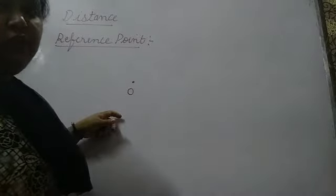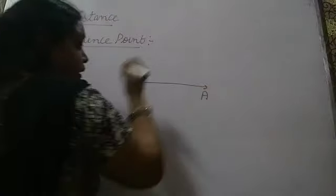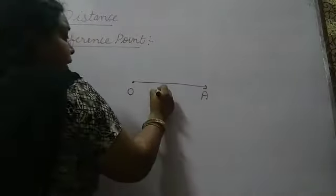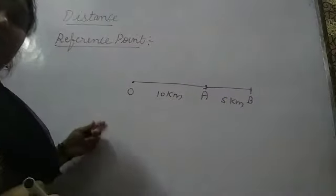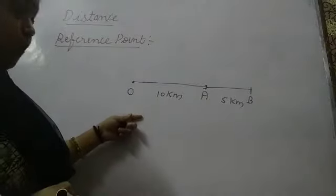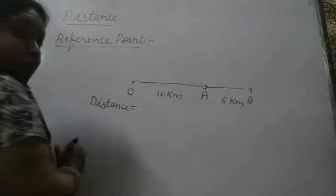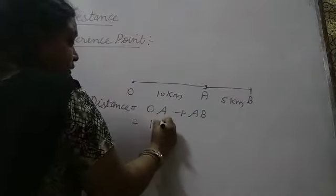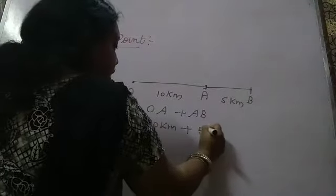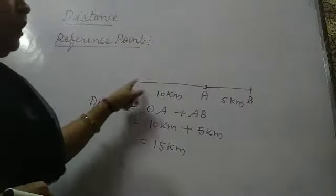The reference point is the point where an object starts its motion or starts changing its direction. For example, O is a point and from O an object moves to A — let us assume this is 10 km. Then again from A it moves to position B, let us assume this is 5 km. So the distance travelled is equal to OA plus AB, which is 10 km plus 5 km, giving a total distance of 15 km.